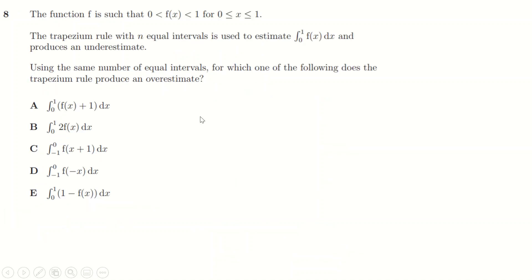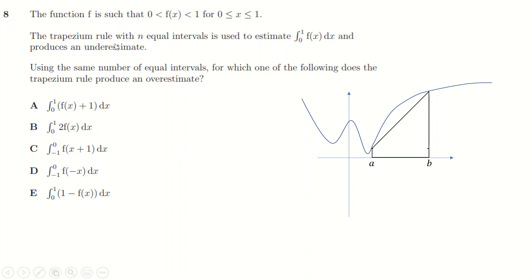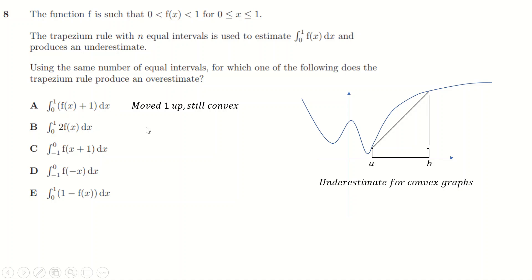Question eight: trapezium rule. To make an underestimate you need the graph to be convex. The original function f(x) between 0 and 1 gives an underestimate when the graph is convex. The first transformation shifts the graph up by 1 — it's still convex. The second stretches it north-south — still convex. The third moves it left and right — still convex.